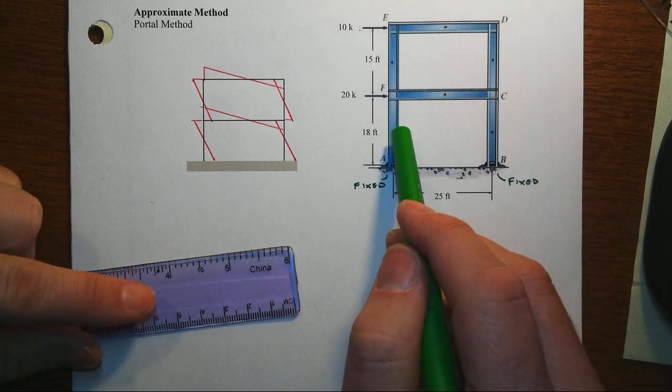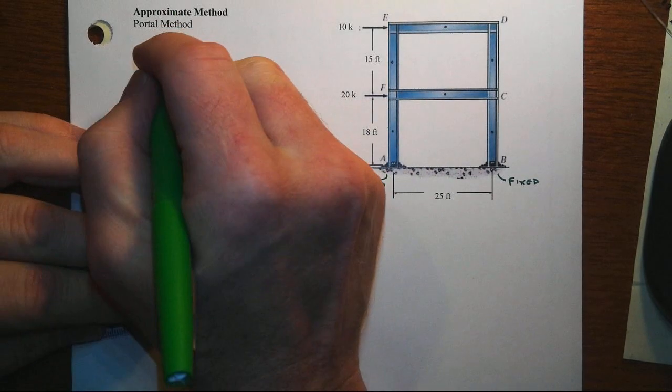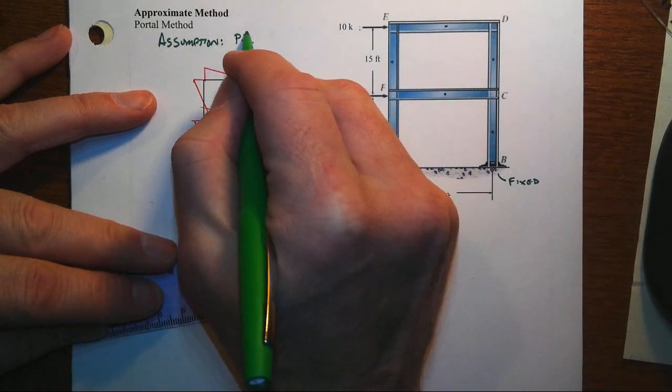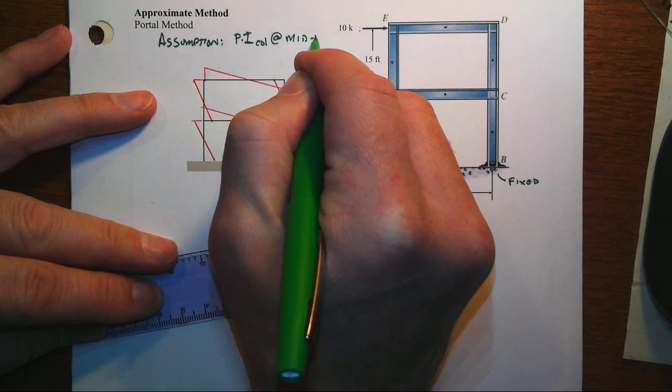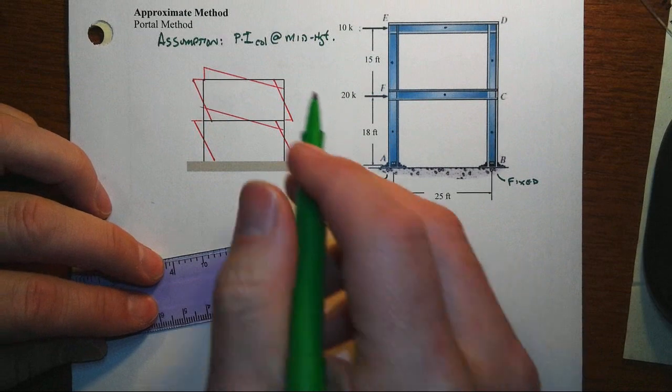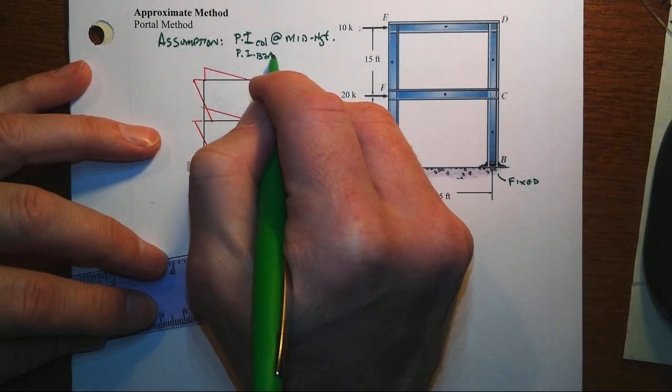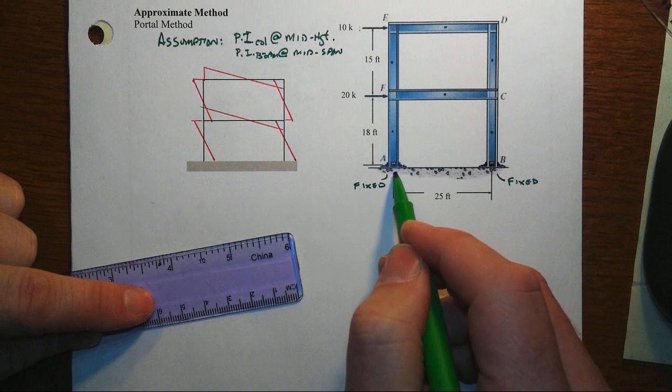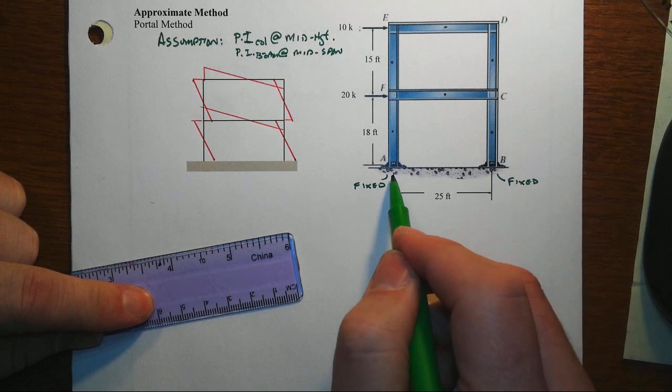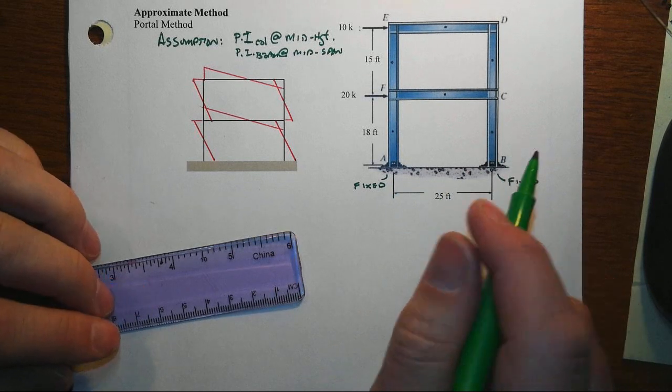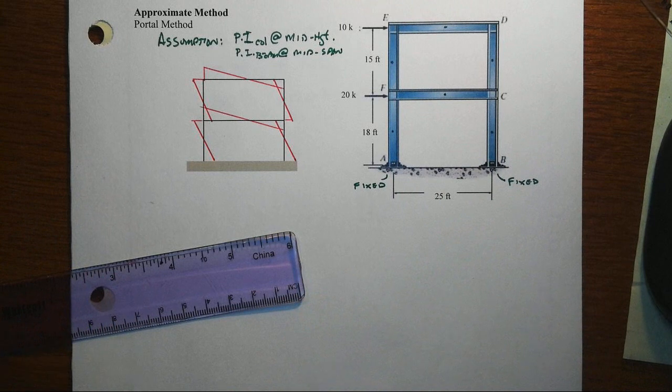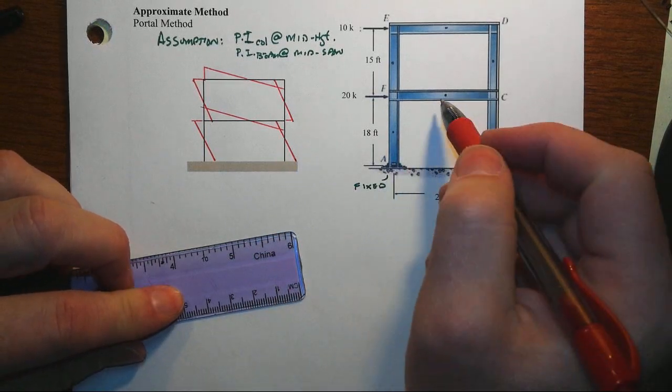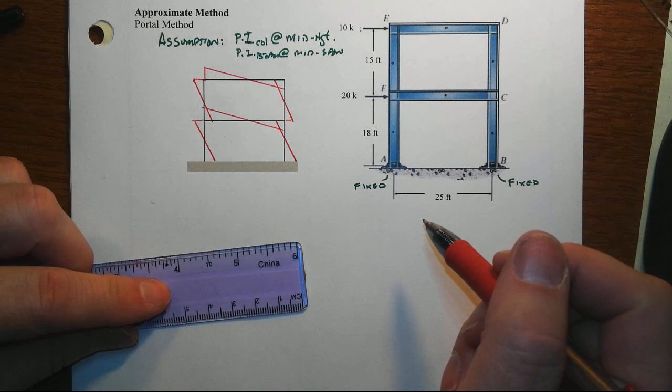So we're going to go ahead and use the assumption here that the points of inflection for the columns are at the mid-height. And we will also make the assumption that the point of inflection for the beams are at mid-span. We can either make that assumption or we can make an assumption about the distribution of lateral forces to the columns in terms of the column shears. And since we only have two columns, that's a fairly easy thing to do that seems somewhat obvious. It would go half and half. But if we had multiple bays, then we want to actually use a slightly different kind of assumption. But here it's okay to just go ahead and use the point of inflection being at the beam location.